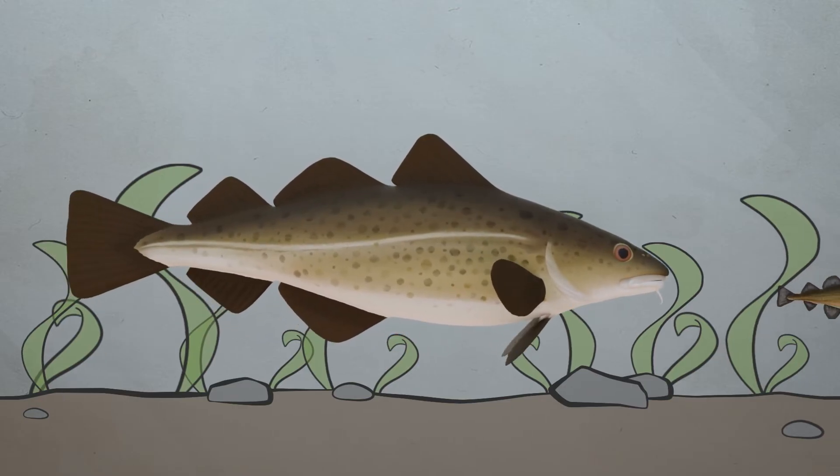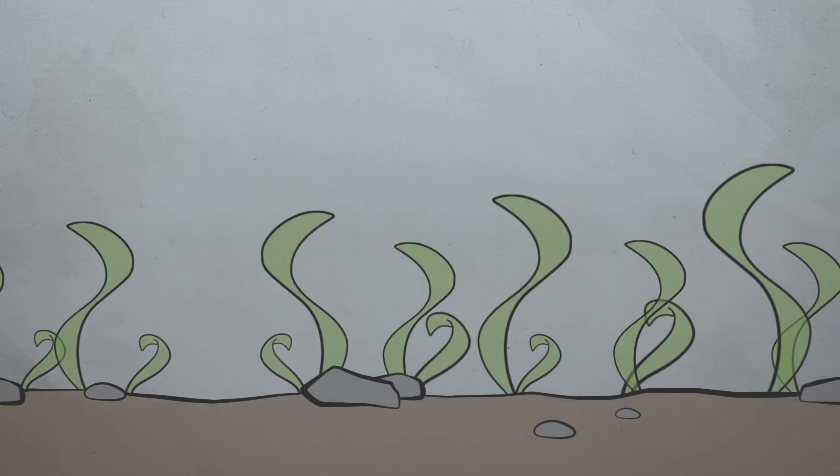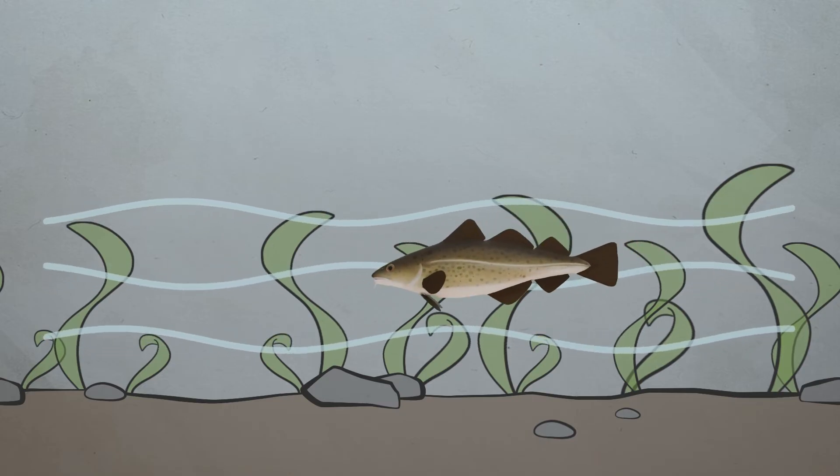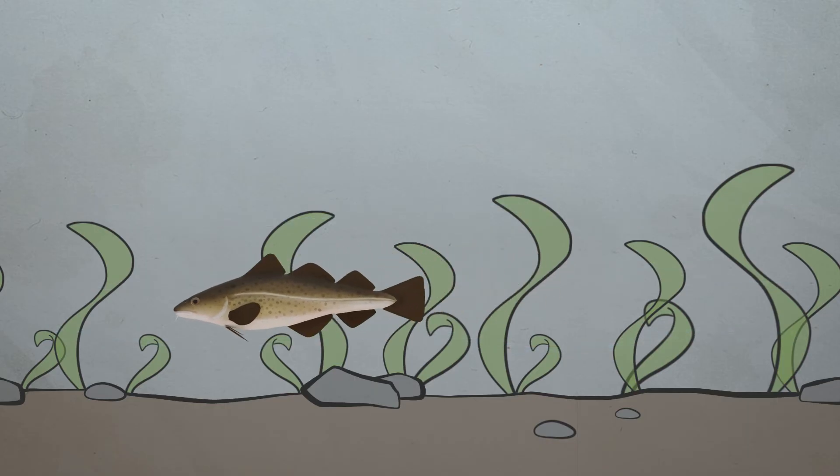Large cod like to eat smaller cod. When the cod start the demersal stage, they will go from drifting with the current to actively migrating. The migration is important in order for them to have the best possible environment and nutritional conditions at all times.